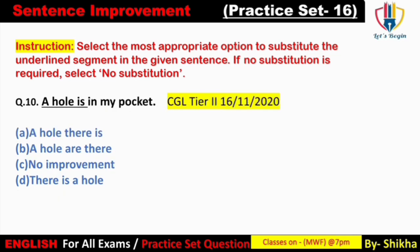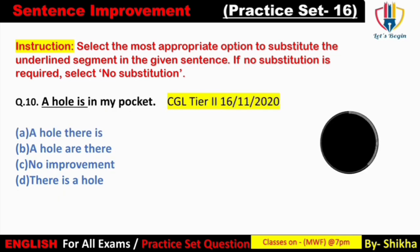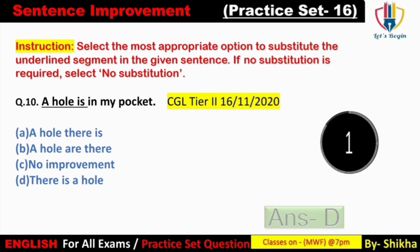Next: 'A hole is in my pocket.' Kisi cheez ko introduce karne ke liye iske pahle 'there is' lagaya jata hai — 'There is a hole in my pocket' — mere pocket mein ek hole hai. Answer: option D.